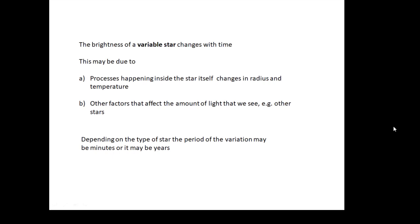how big it is, or may change its temperature. This is called an intrinsic variable. Or there could be things happening outside the star which is changing the amount of light that we see, for example eclipsing binaries. That's an extrinsic variable.